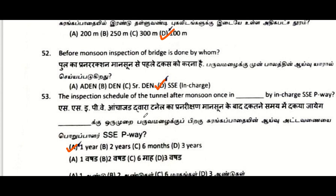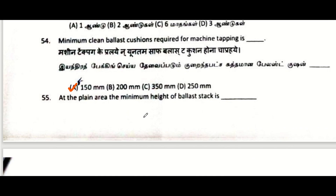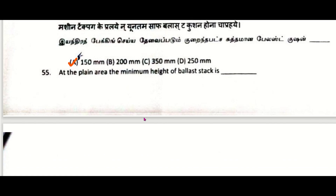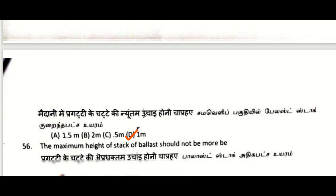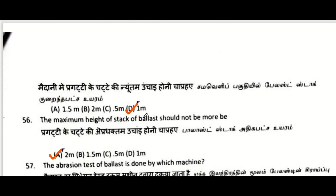Before monsoon, inspection of bridge is done by SSC in-charge. Inspection schedule of tunnel after monsoon: once in a year by the SSC P-way in-charge. Minimum clean ballast cushion required for machine tamping: 150 mm.